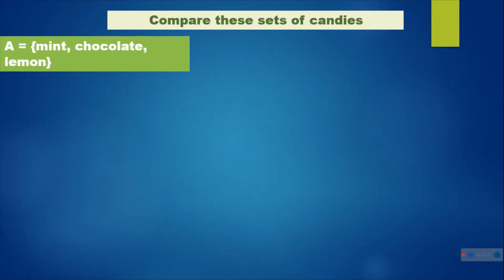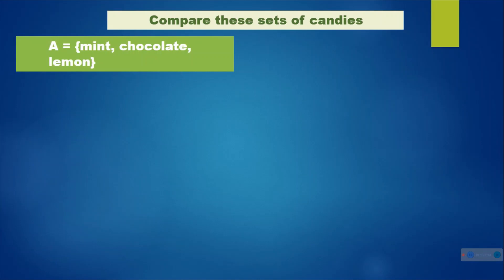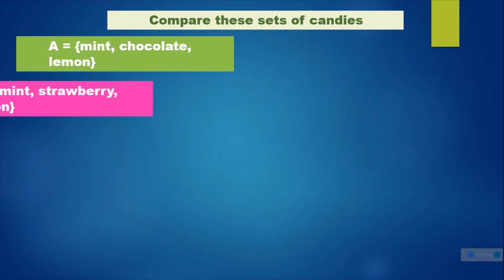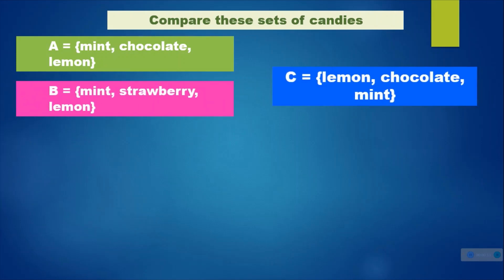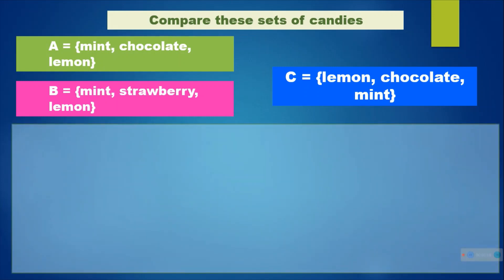Compare these sets of candies. In set A, we have mint, chocolate, and lemon. Set B has mint, strawberry, and lemon. In set C, we have lemon, chocolate, and mint.